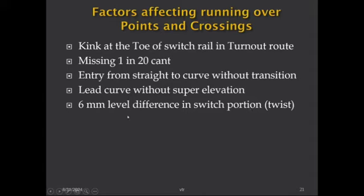Fifth factor: the 6mm level difference at the Junction of Head. This is applicable for both loop line and main line movement, but at loop line speeds it is less critical. However, on the main line at 100–120 km/h, the 6mm level difference causes slight jolting. The 1-in-20 cant issue and the level difference together affect main line running over points and crossings.